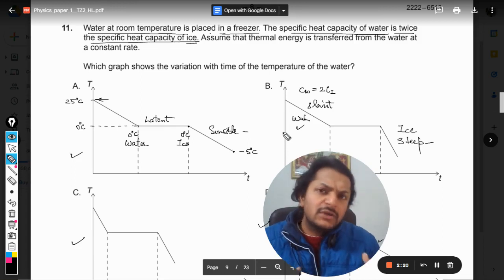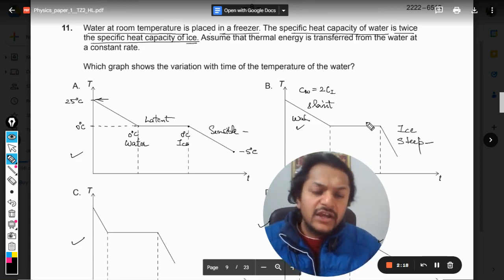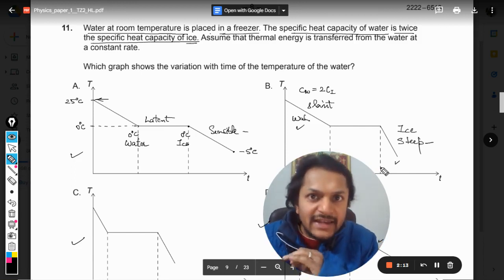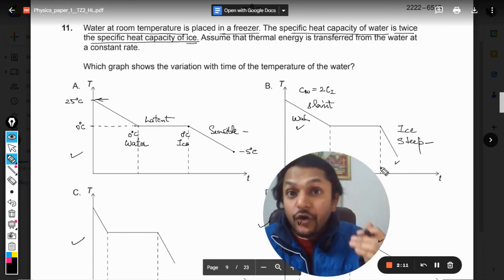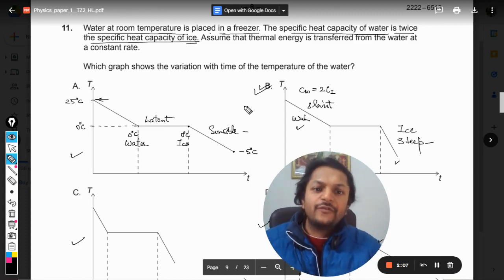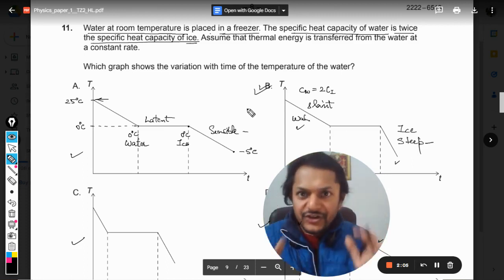But in the case of ice, by emitting less heat, by removing less heat, the temperature is falling at a faster rate. So definitely the answer will be B for us. This is the reason.